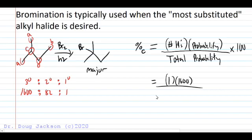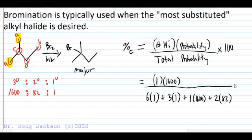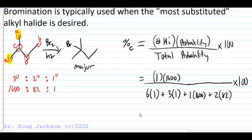We have the possibility of substituting position A. There are six, two CH3s that we can substitute of that type A times a one-to-one odds for a primary position. We add those to the three hydrogens of type B. They're also primary, so the odds number is one. Add that to our tertiary that we just found was one hydrogen at 1600 to 1 odds. And then finally, there are two of type D that are secondary, so they're 82 to 1 odds. To get a percentage though, part over the whole times 100. So we're going to punch that in the calculator here.